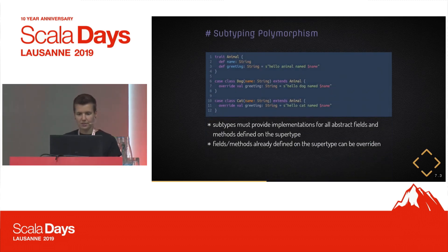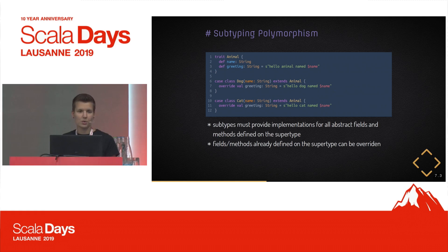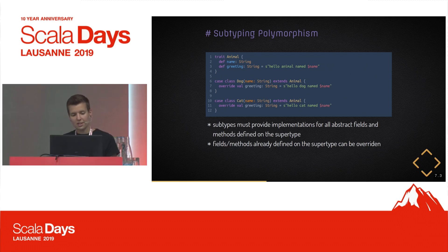Let's look at a short example. Again, we have an Animal and two concrete subclasses. The subtypes need to provide implementations for all the methods or fields defined on the supertype. Since we don't provide an implementation for `name` on Animal, Dog and Cat are required to implement that field. We could leave out the `greeting` but we could also define a more specific implementation for it and override the definition provided by the supertype.